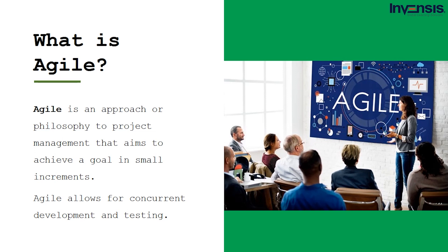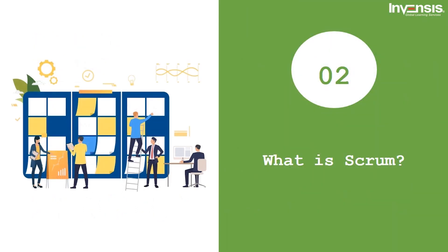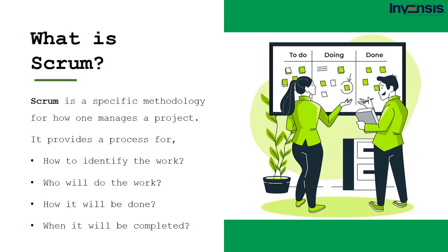Now that we have understood what Agile is, let's understand what Scrum is. Scrum is an Agile process that allows software development teams to focus on producing business value in the shortest amount of time by examining actual functioning software frequently and quickly. It emphasizes accountability, collaboration, and iterative development toward well-defined objectives. The Scrum framework was created to deal with the problem that requirements are likely to change or are unknown at the start of a project. As a specific methodology, Scrum provides a process for how to identify the work, who will do the work, how it will be done, and when it will be completed.